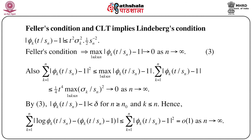Also, Σ_{k=1}^{n} |φ_k(t/s_n) - 1|² ≤ max_{1≤k≤n} |φ_k(t/s_n) - 1| · Σ_{k=1}^{n} |φ_k(t/s_n) - 1|. Doing a little algebra, we can show that this entire quantity is ≤ (t⁴/4) · max_k (σ_k/s_n)², and by Feller's condition this goes to 0 as n → ∞.